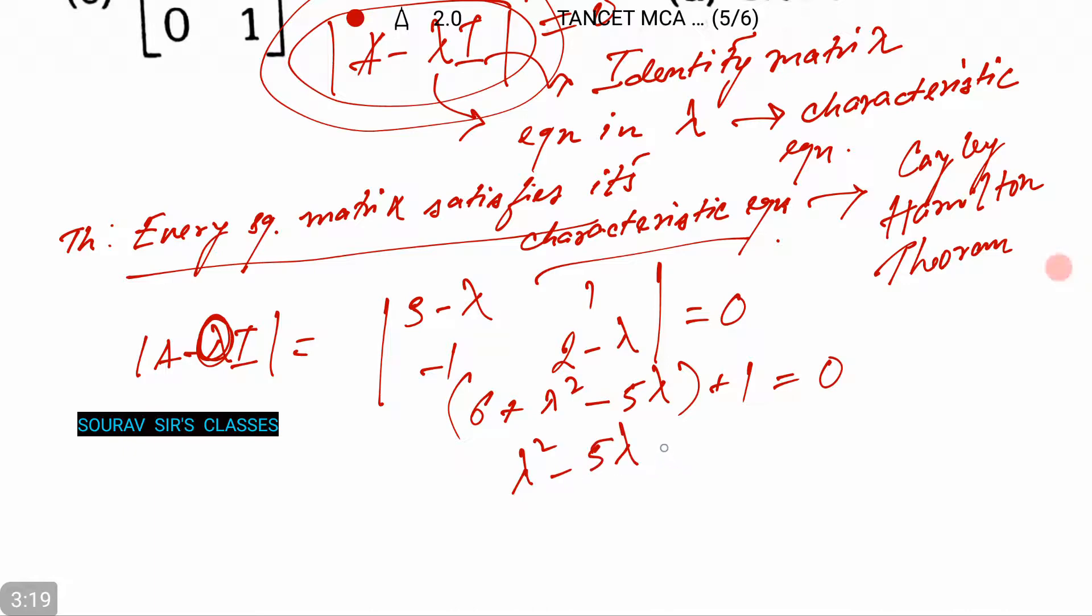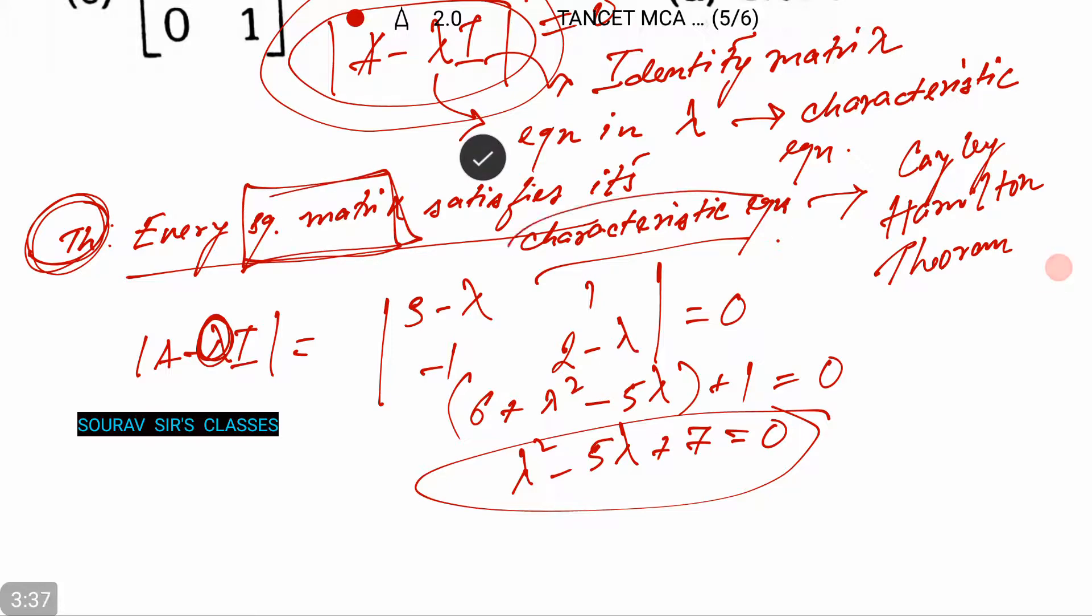Now by Cayley-Hamilton theorem, which is this one, we have that every square matrix satisfies its characteristic equation.